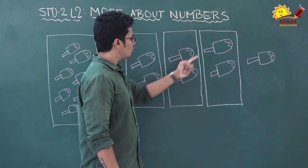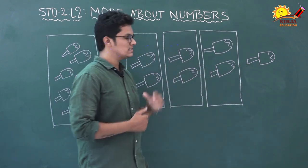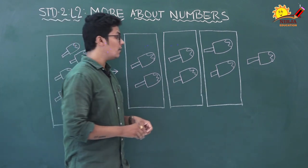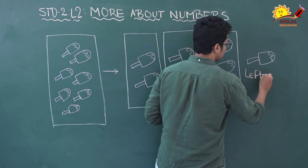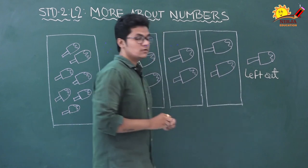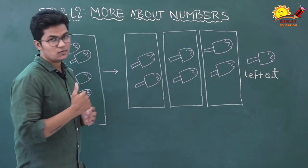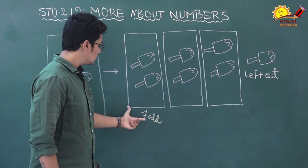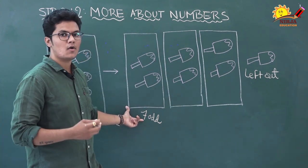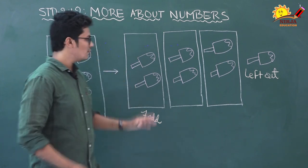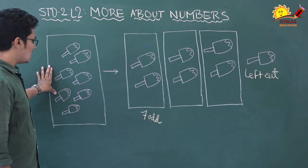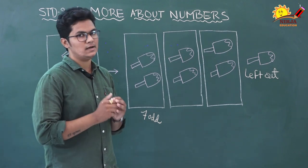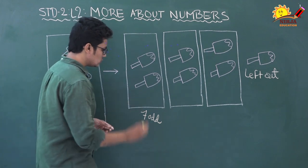One, two, three, four, five, six, seven — but one ice cream is left out from the pair. This situation has become odd. One ice cream left out, it does not have a partner. So we learned that the number seven is an odd number. The numbers which we cannot write in pairs are called odd numbers.